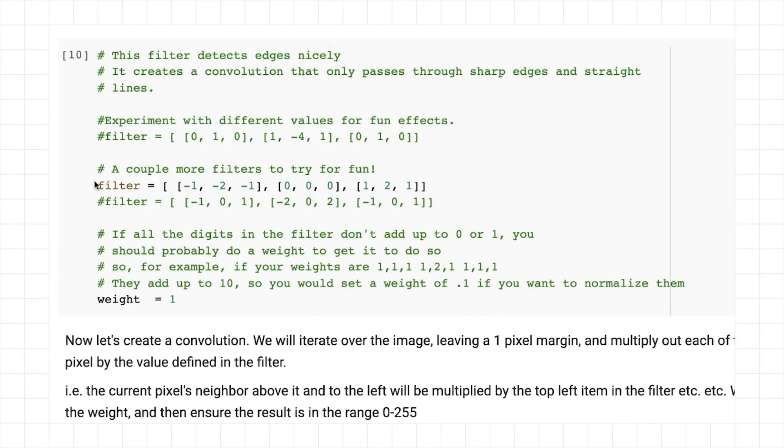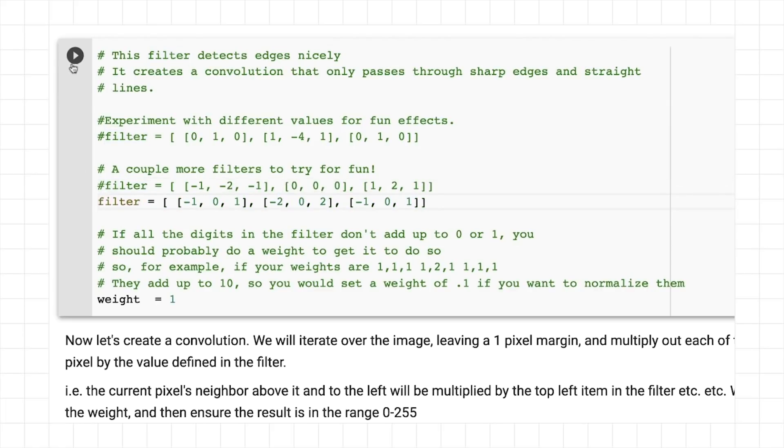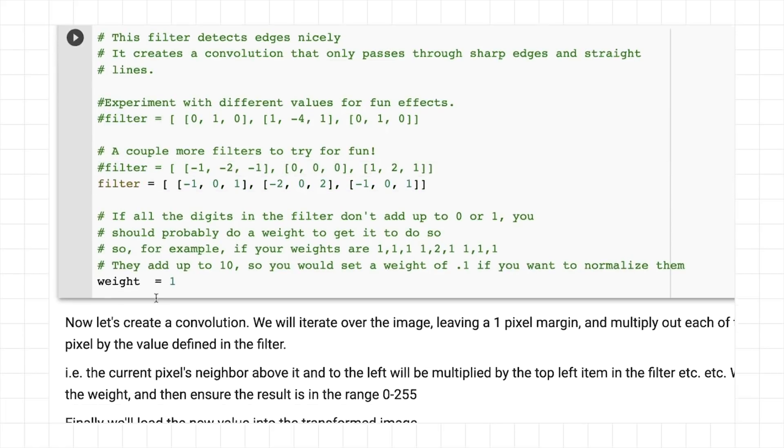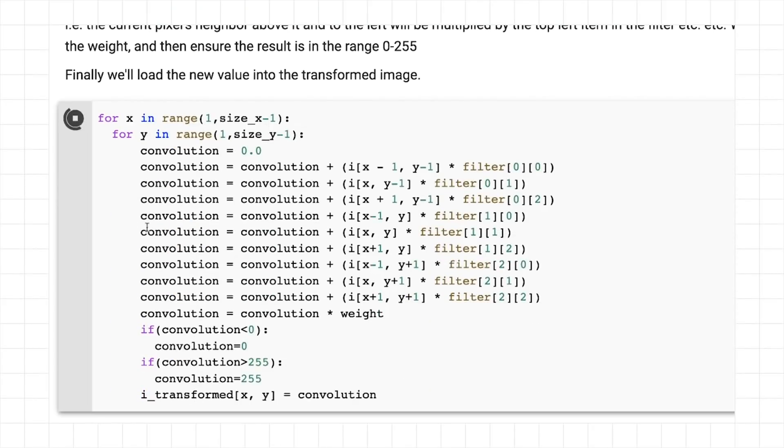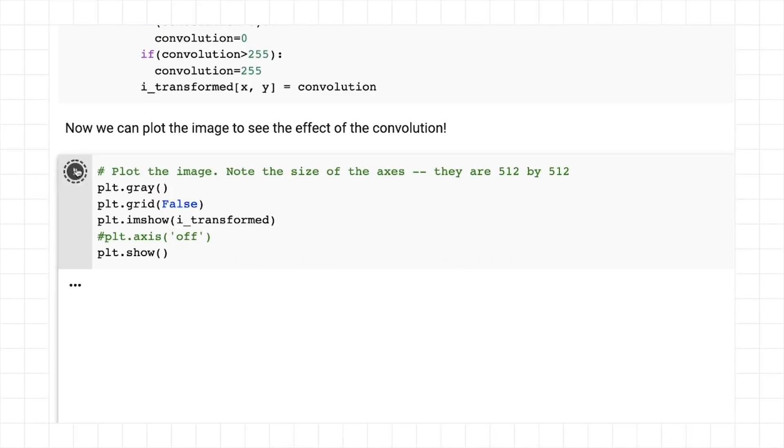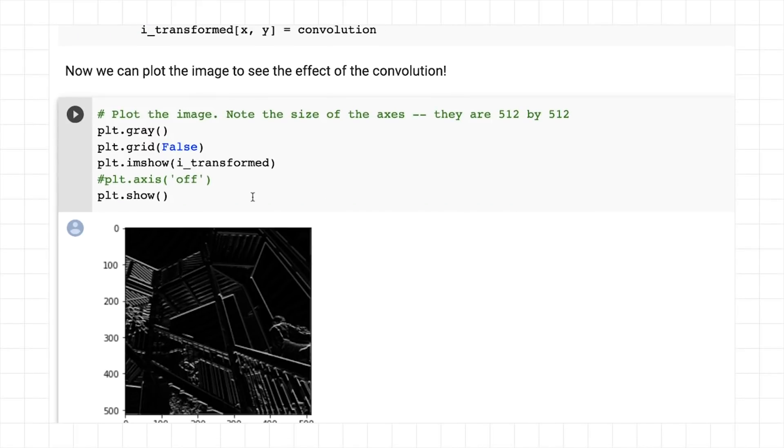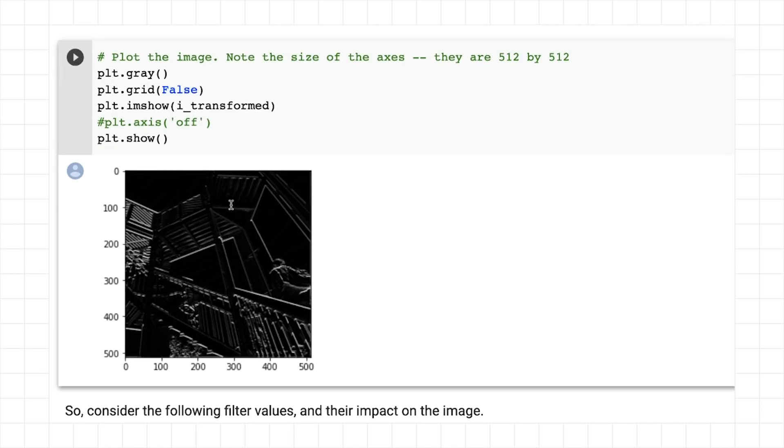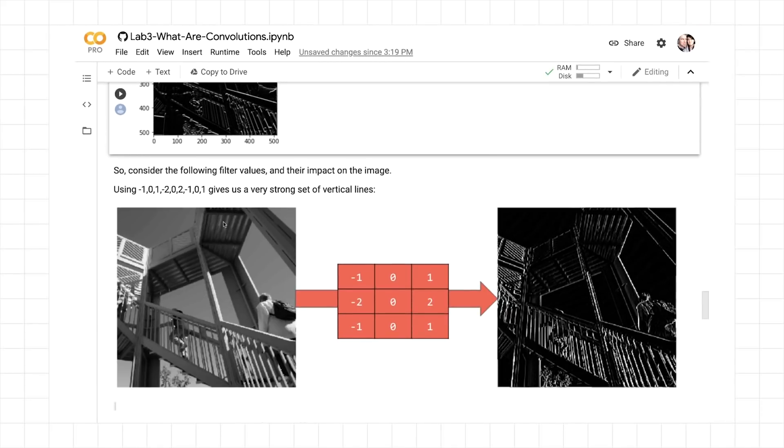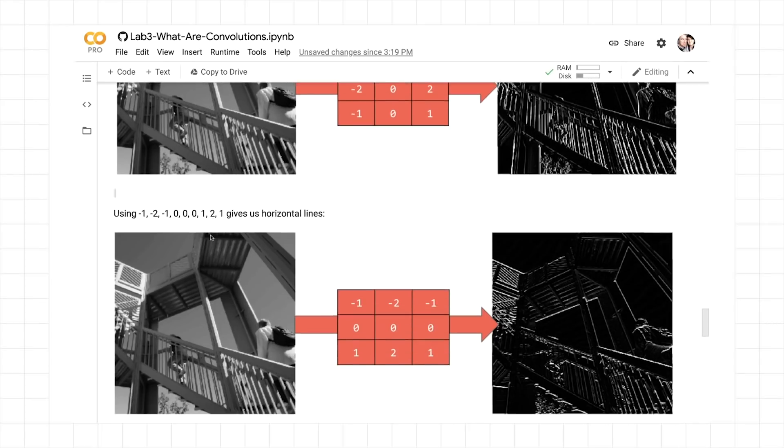For example, I could go and change to a different filter, like this one, run this to set the filter, and then run the code again. And now plot the image again. And we'll see the one that really emphasizes the horizontal lines. So you can consider following filter values and look at what their impact on the image is, or you can experiment with your own.